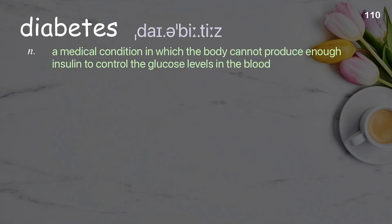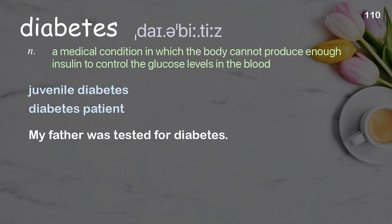Diabetes: a medical condition in which the body cannot produce enough insulin to control the glucose levels in the blood. Examples: juvenile diabetes, diabetes patient. My father was tested for diabetes.